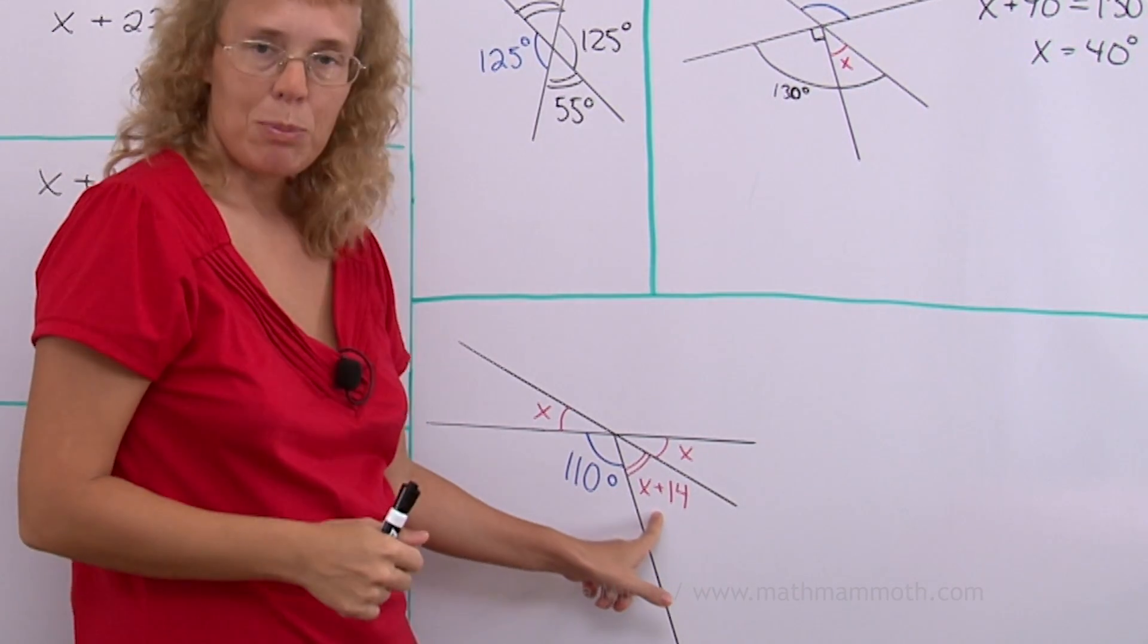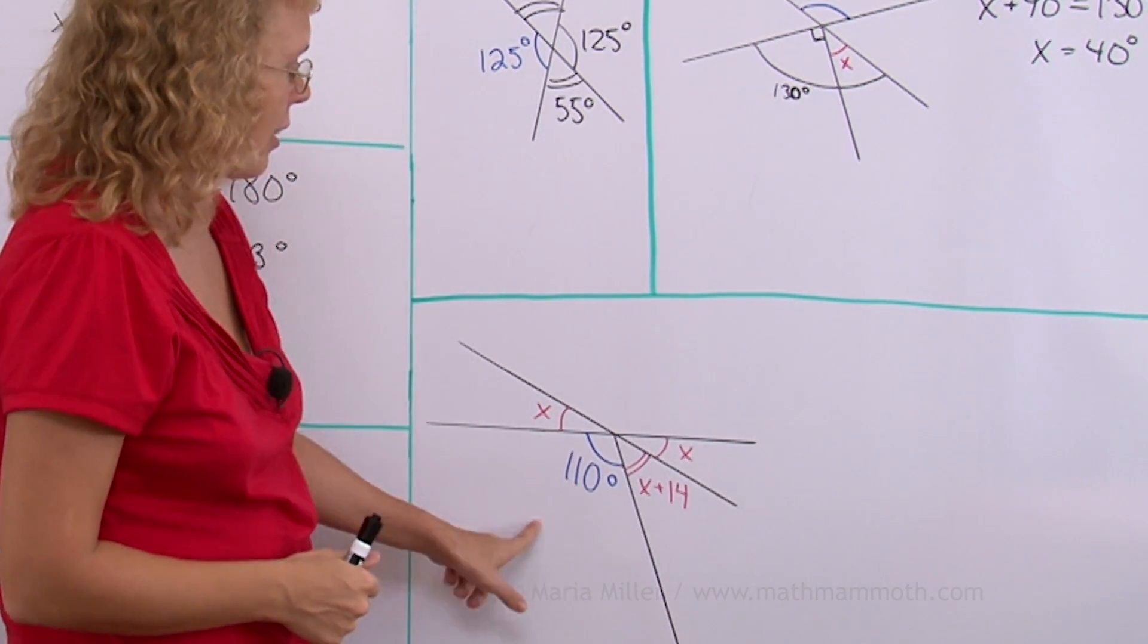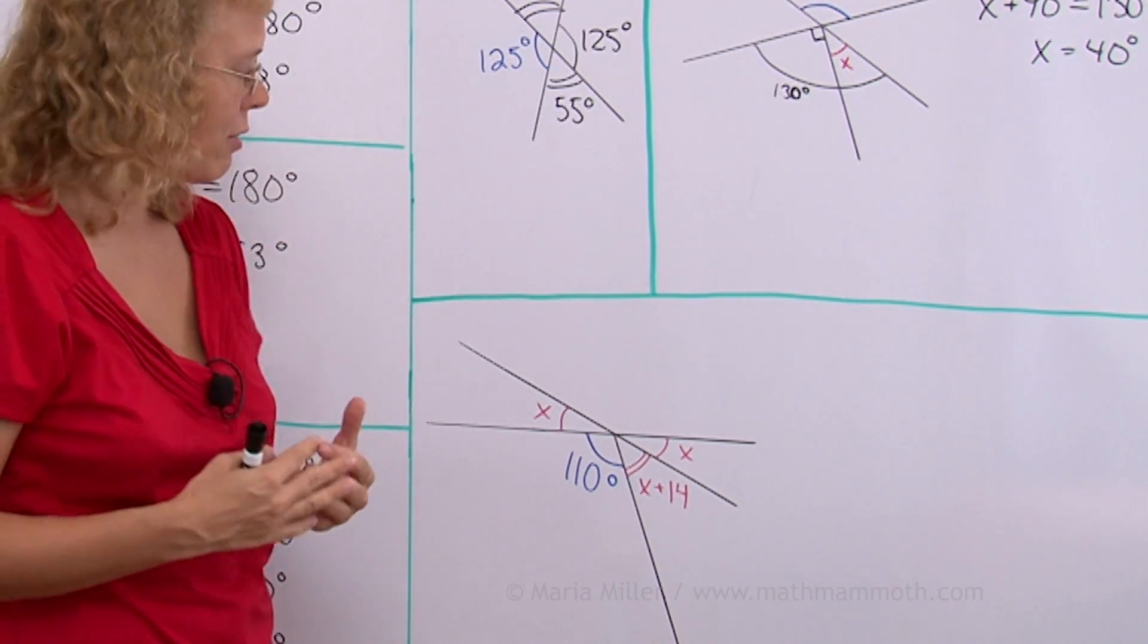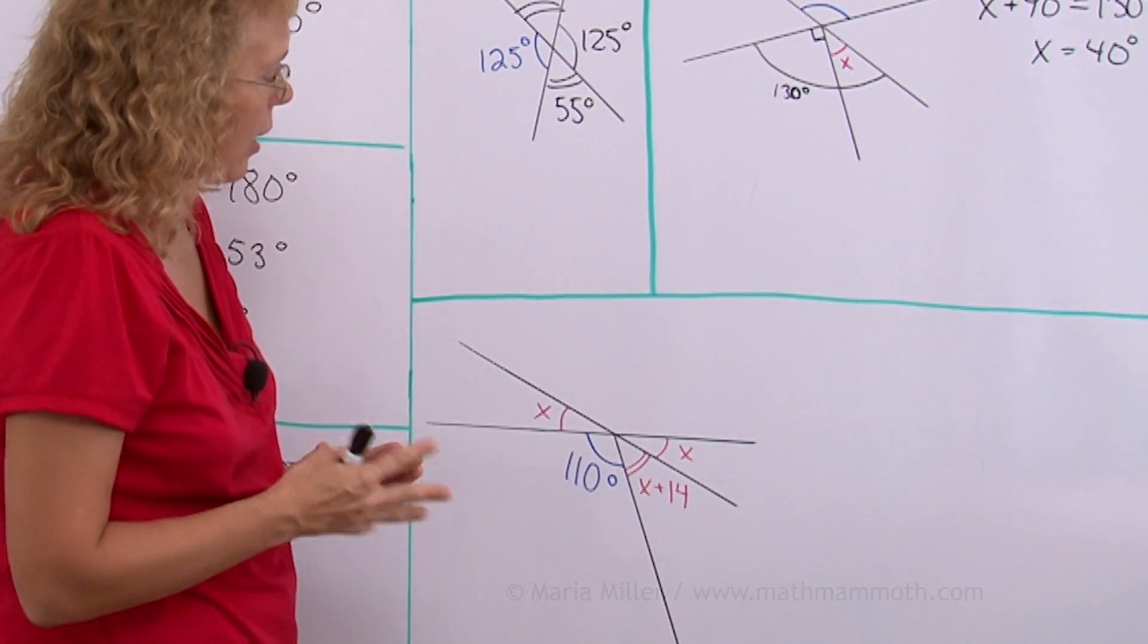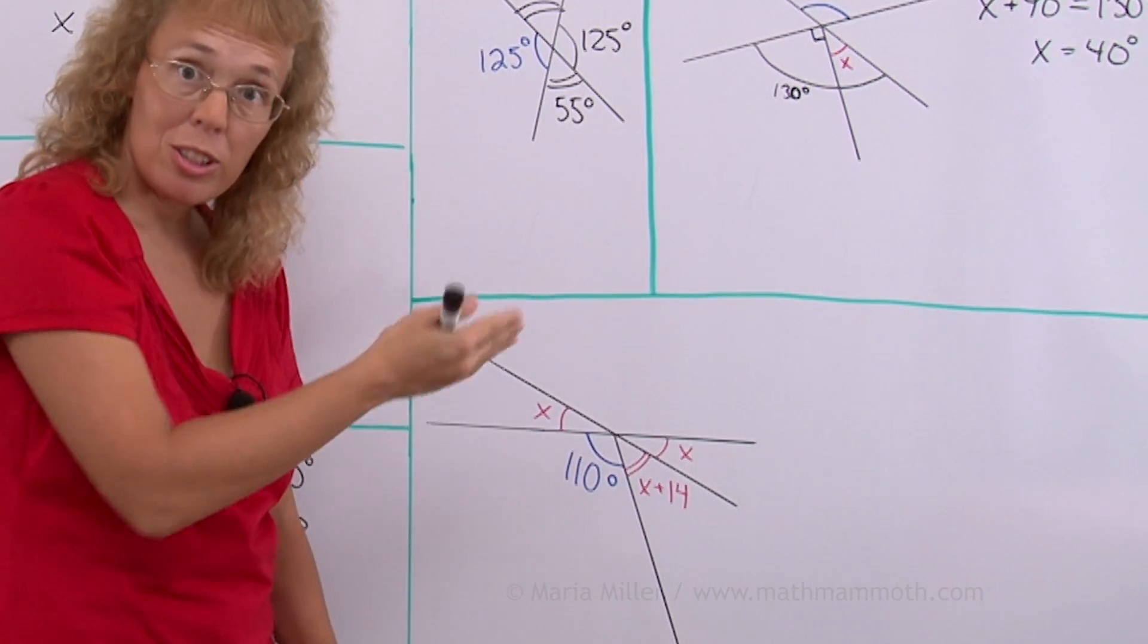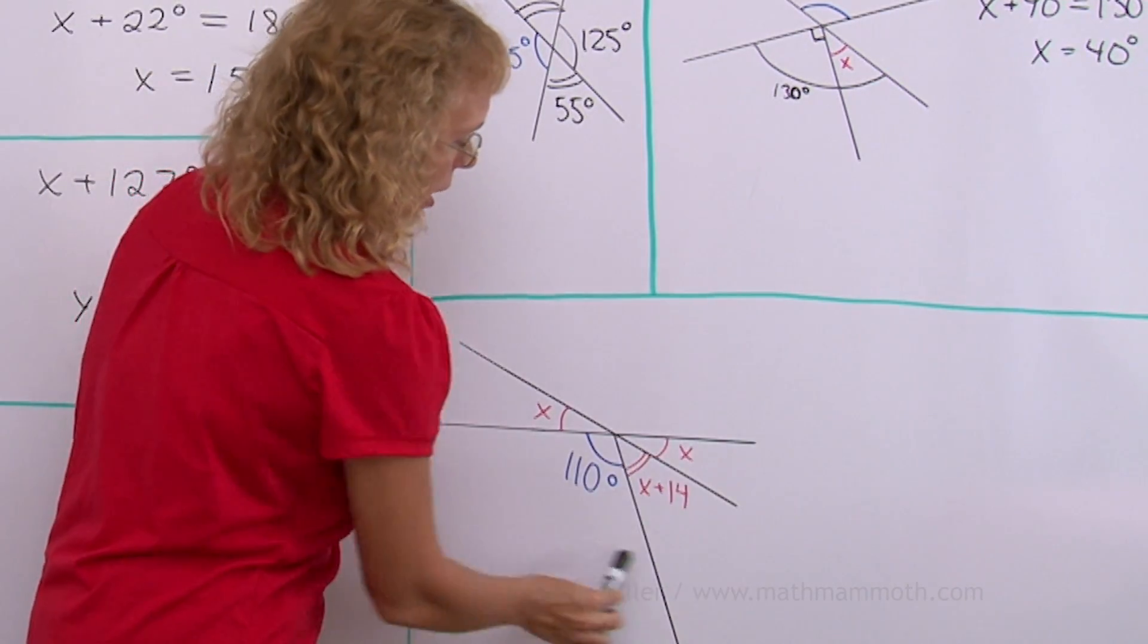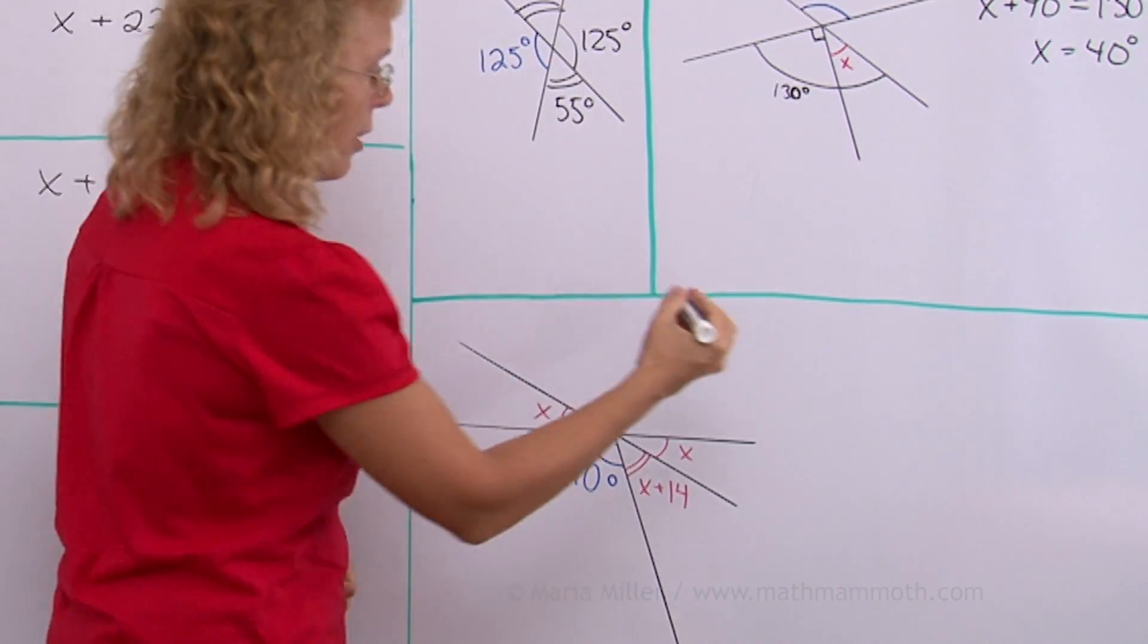Lastly we have here x plus 14, x, 110 degrees. You can use a few different principles. You can use both of these to help get you started. But I'm going to just look at this line here. And these three angles forming a straight angle together. This and this and this form a straight angle, 180 degrees. So I'm going to write an equation now about it.